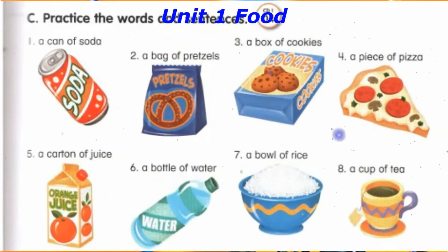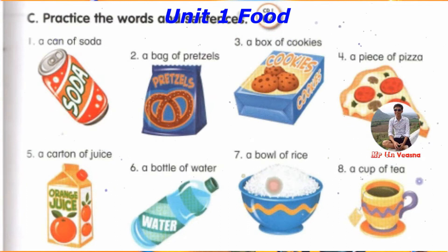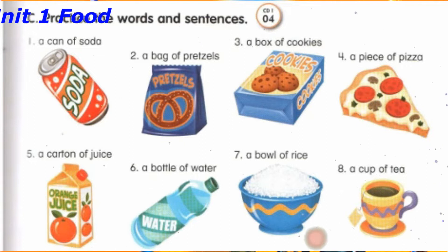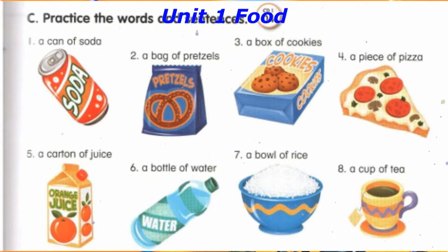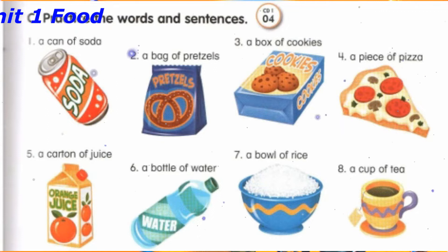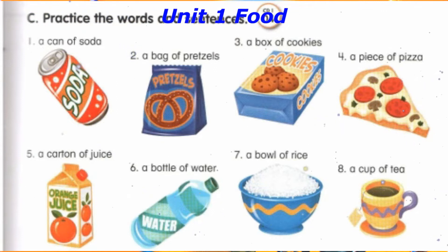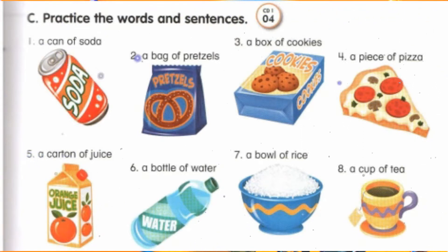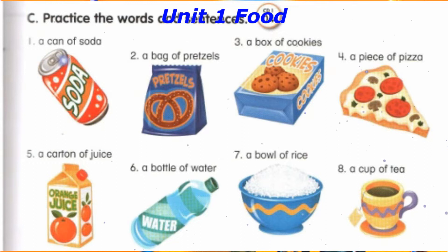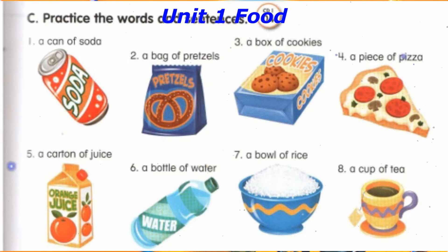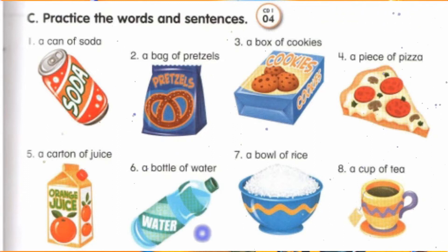Track 4. C. Practice the words and sentences. Number 1: a can of soda. Number 2: a bag of pretzels. Number 3: a box of cookies. Number 4: a piece of pizza. Number 5: a carton of juice. Number 6: a bottle of water. Number 7: a bowl of rice. Number 8: a cup of tea.